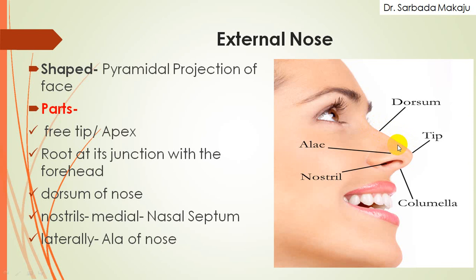When you move downwards, there is the presence of an expansion of the nose which forms the opening. This portion is known as the nostril. In the middle of the nostril, there is the presence of cartilage. This cartilage is known as the nasal septum. Laterally, the muscular part is present in the nose and this portion is known as the ala of the nose.